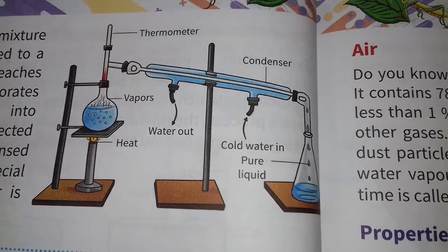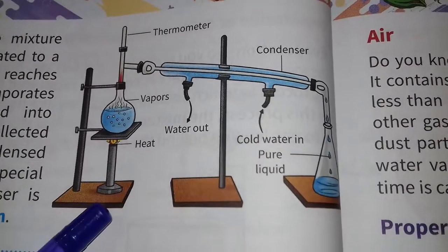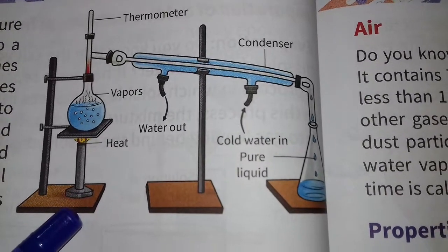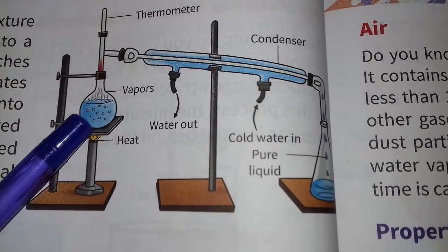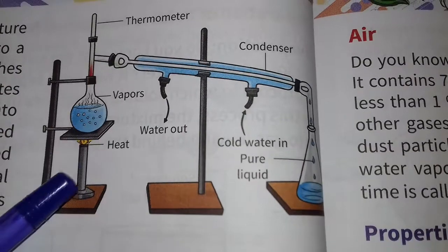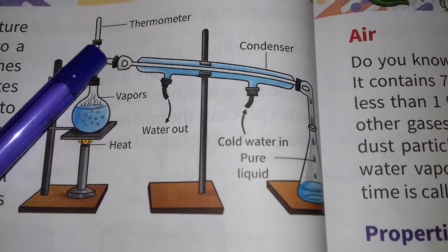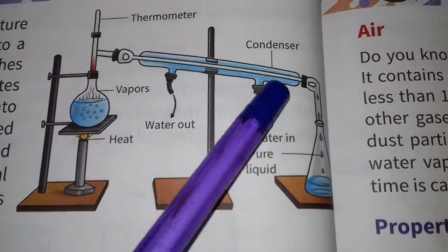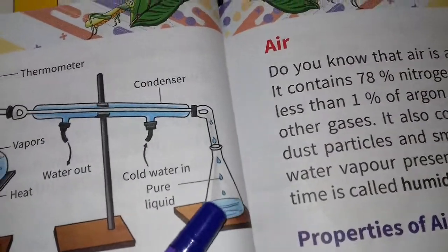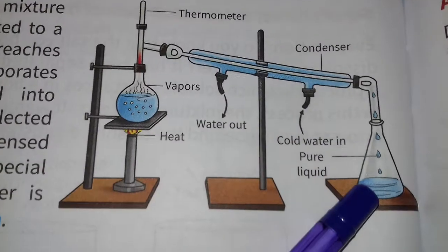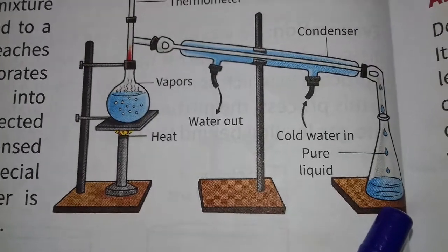These vapors are collected in a container, cooled, and condensed to obtain the pure liquid. A special apparatus like a Liebig condenser is used for the process of distillation. You can see the process here: a beaker is heated, vapors travel through a condenser with cold water flowing in, and pure liquid comes out.